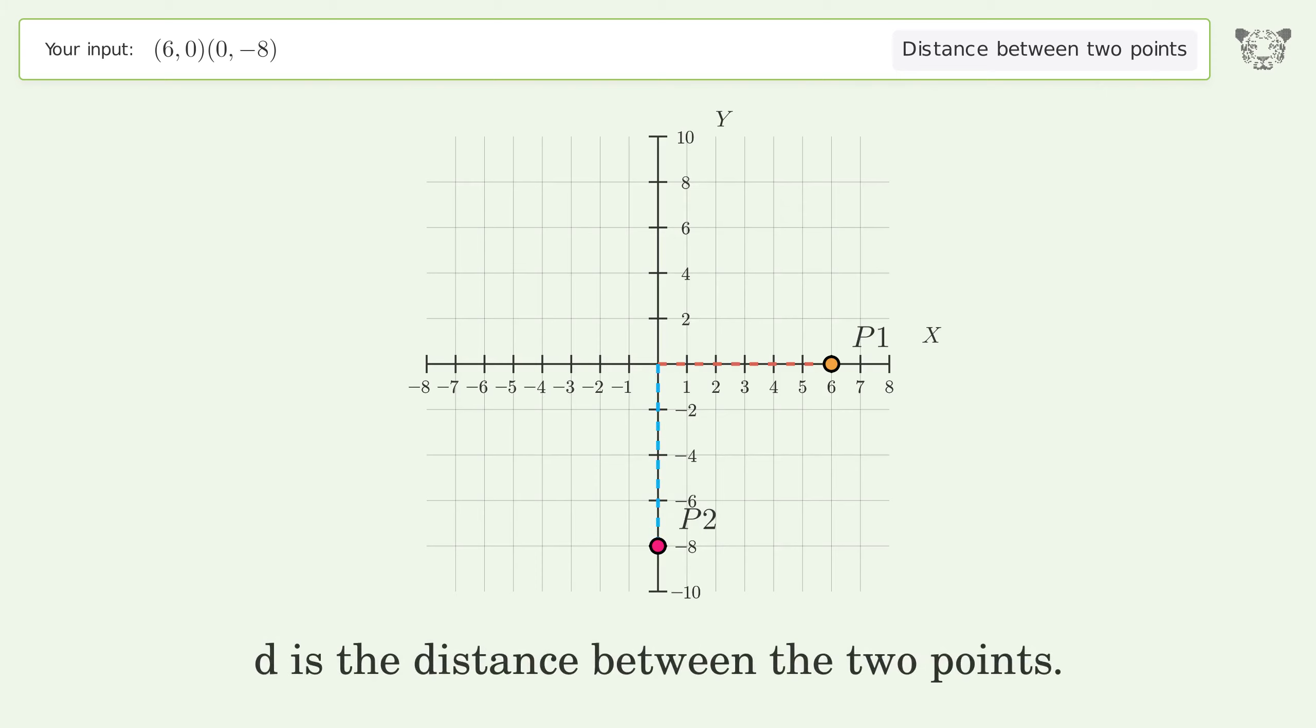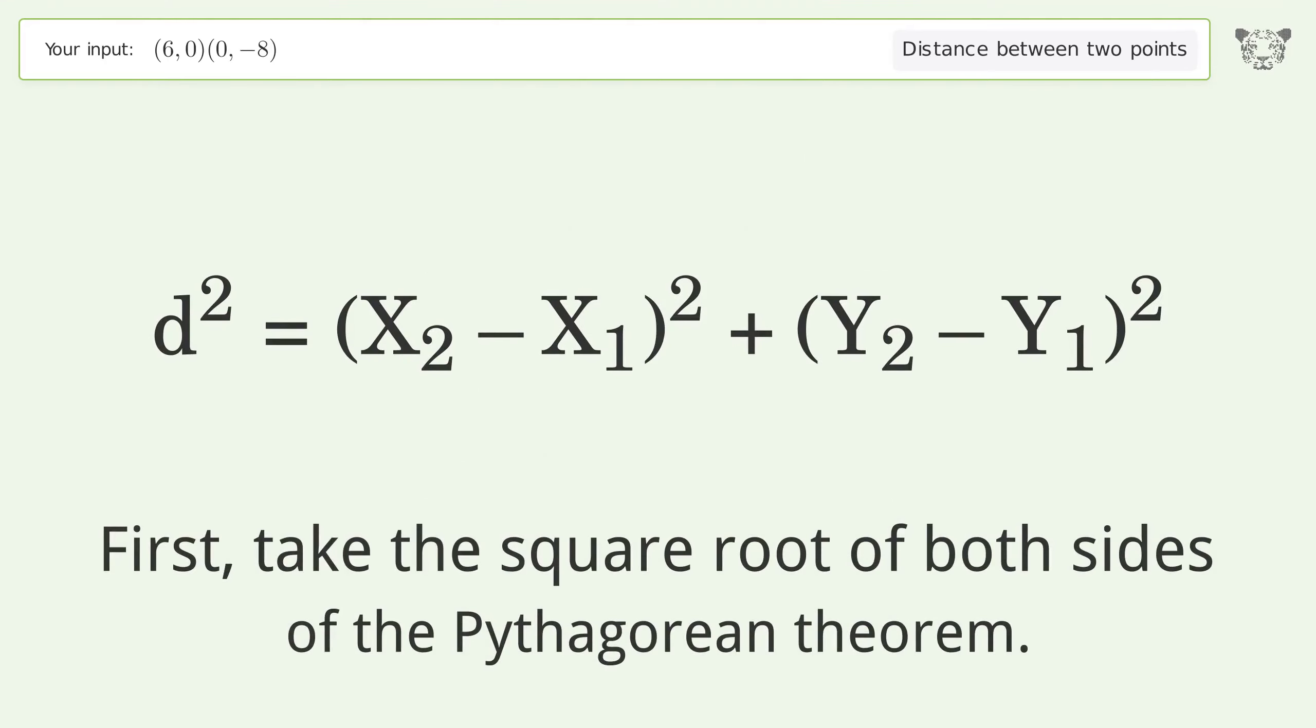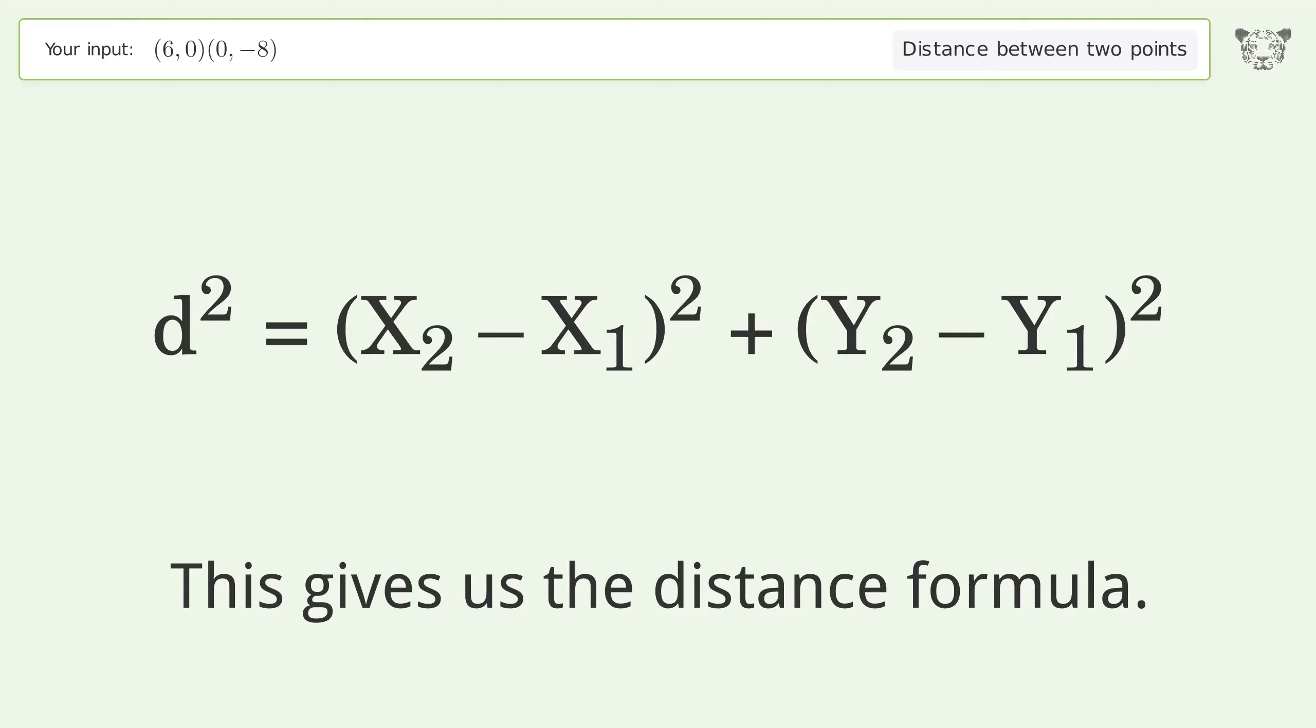d is the distance between the two points. First, take the square root of both sides of the Pythagorean theorem. This gives us the distance formula.